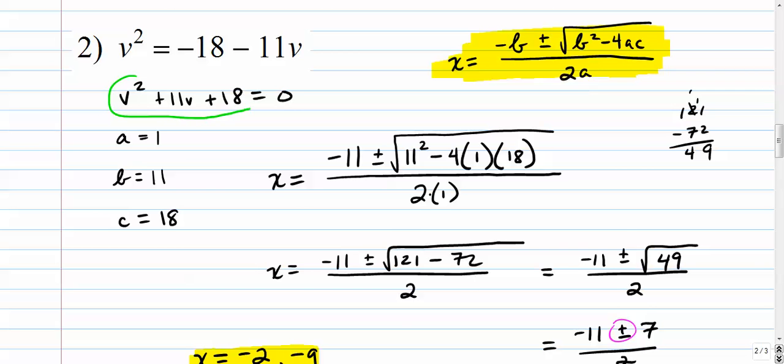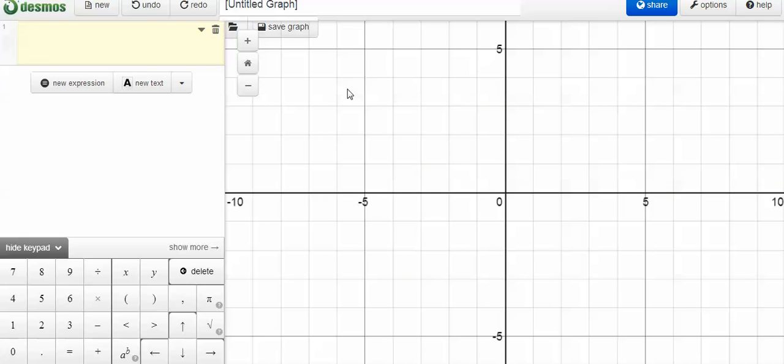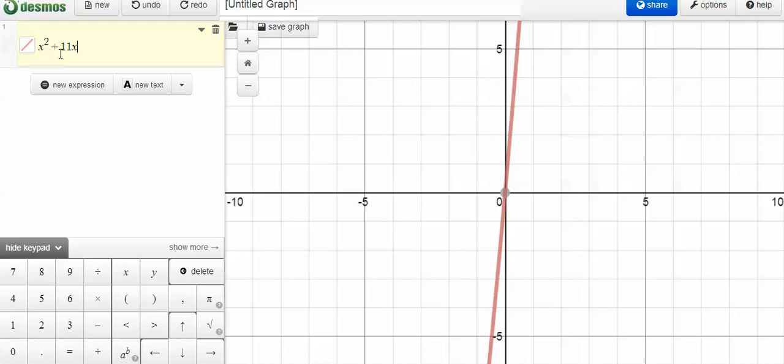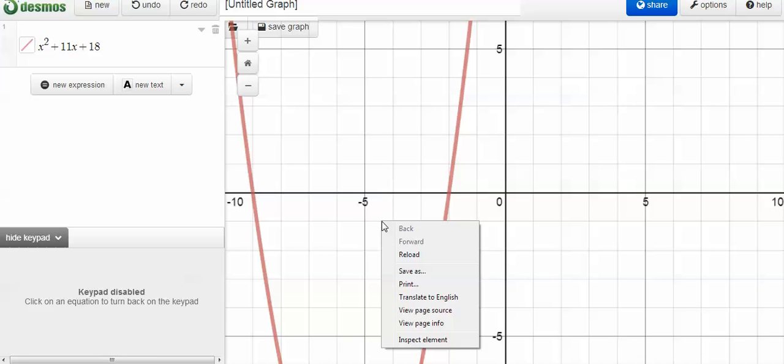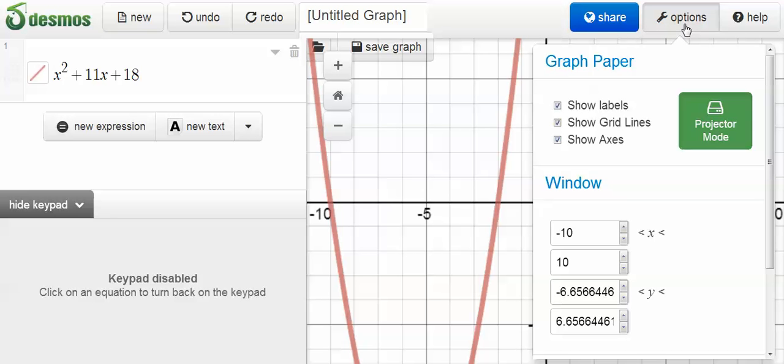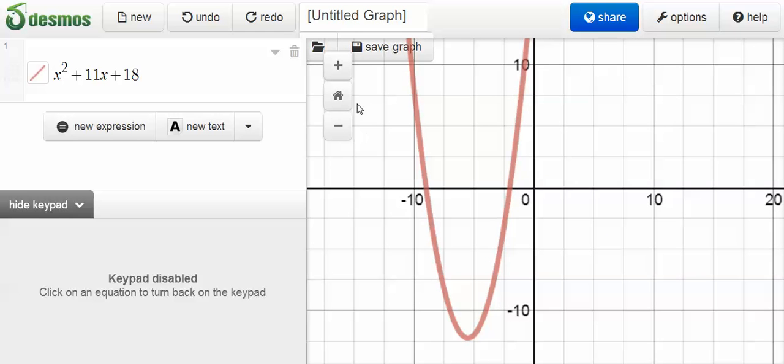We're going to graph v squared plus 11v plus 18. So I'll go back to my desmos.com calculator, and I'm going to change all my v's to x's. So I've got v squared plus 11. Let me go back there. Plus 11x plus 18. All right, and you can see right here, I'm going to zoom out a little bit here. I'm going to zoom. Options. Let's take it off projected mode. Oh, here we go. That was easy. So we zoom out, and we see that, of course, you know, this graph is crossing. It's opened up because the lead coefficient's positive, and it's crossing at the places where we thought it was going to cross at negative 2 and negative 9.